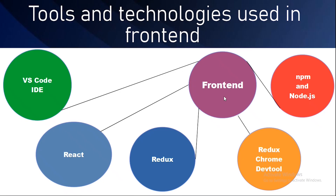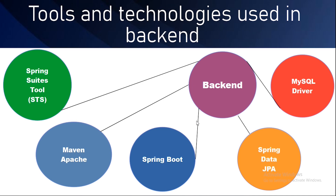Here are the tools and technologies used in the frontend: VS Code IDE, React, Redux, Redux Chrome DevTools, npm, and Node.js. For the backend, the tools and technologies include Spring Suite Tool (STS), Maven, Apache, Spring Boot, Spring Data JPA, and the MySQL driver.